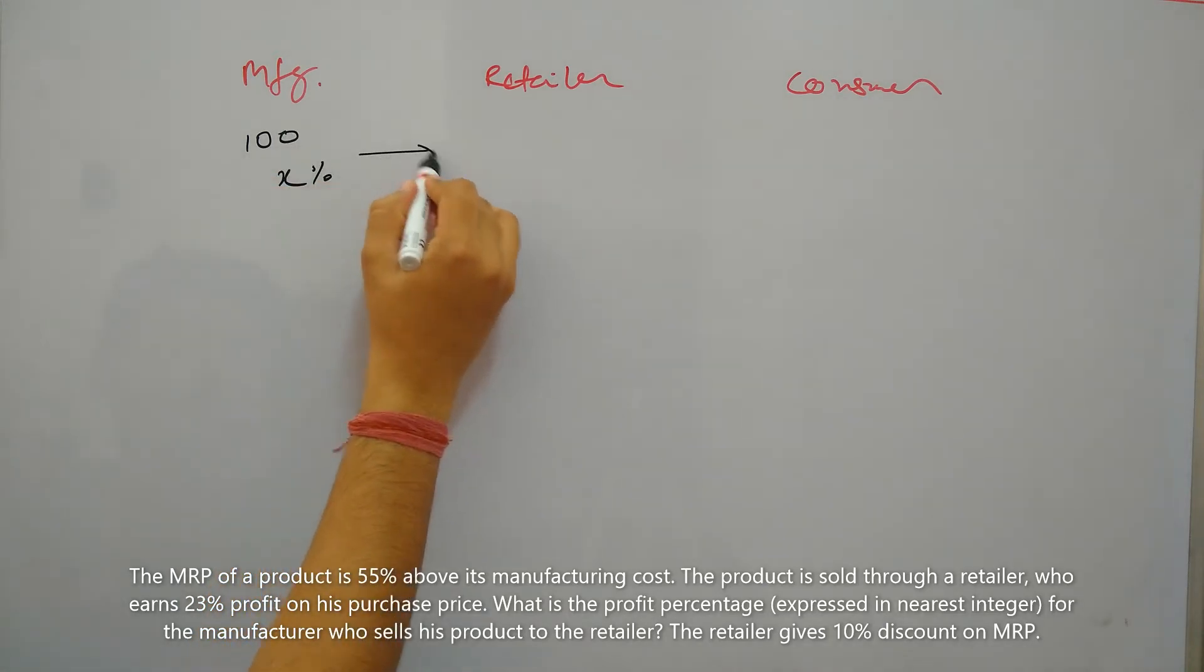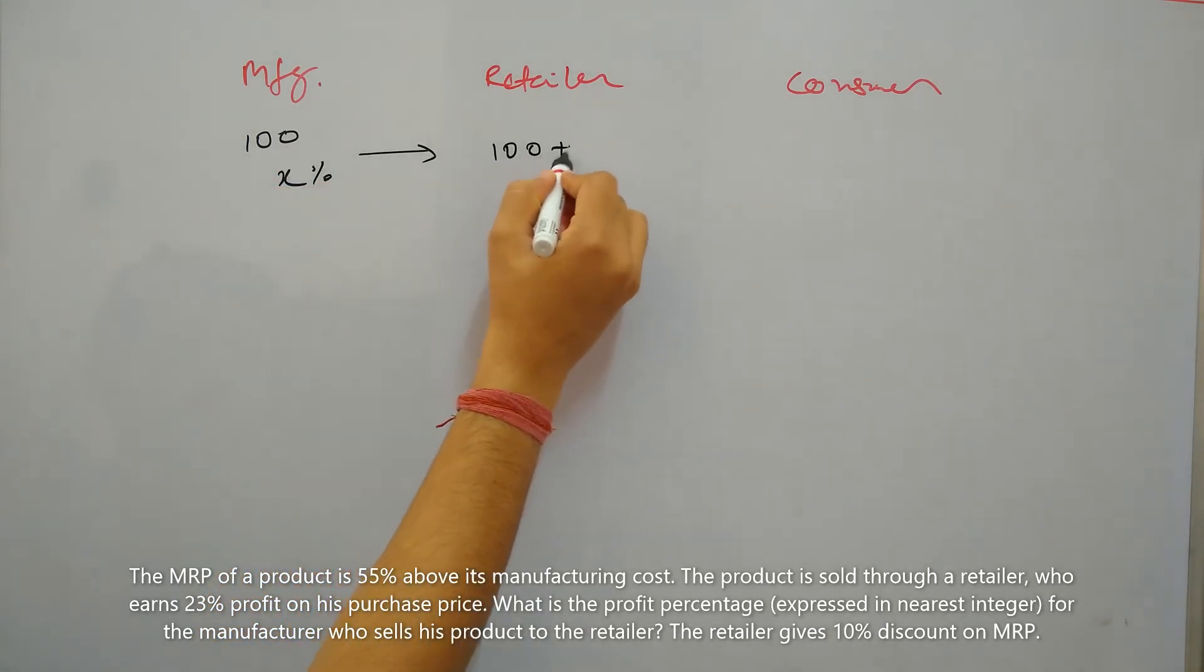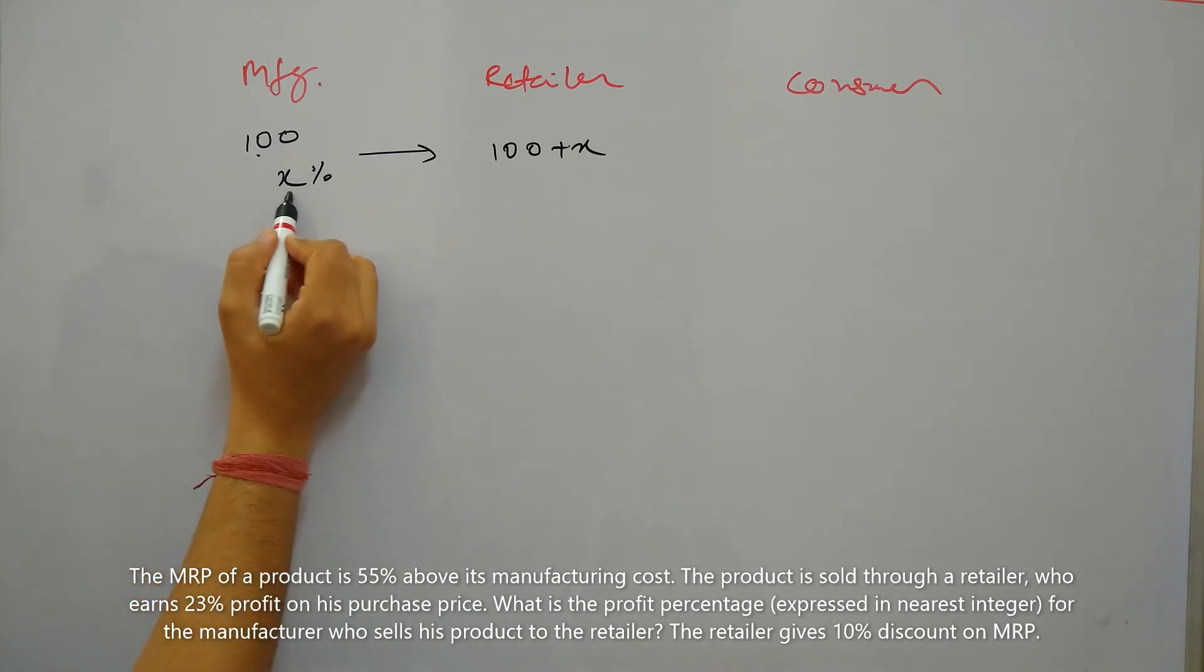So he will sell this item to the retailer at 100 plus X rupees. 100 is the manufacturing cost, X is the manufacturer's profit. So the retailer is buying this item at 100 plus X rupees.